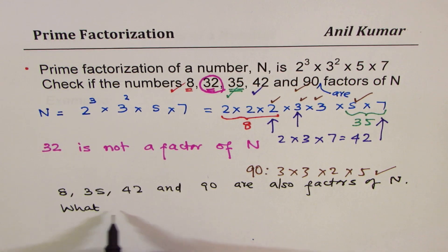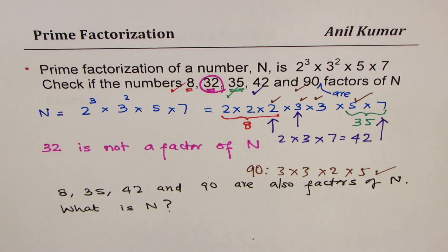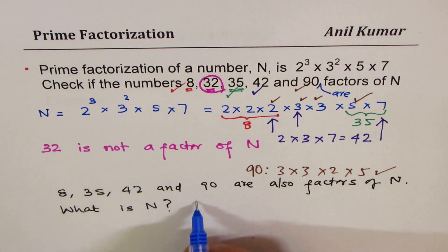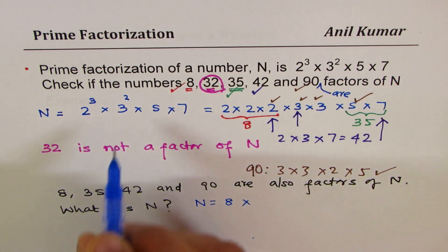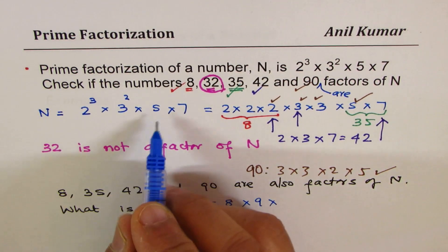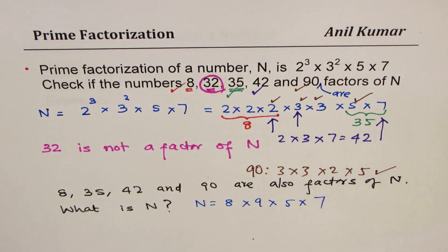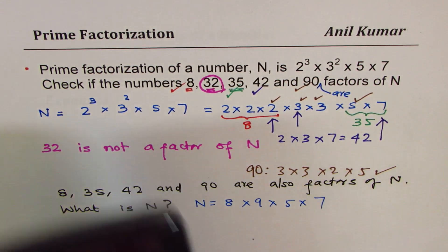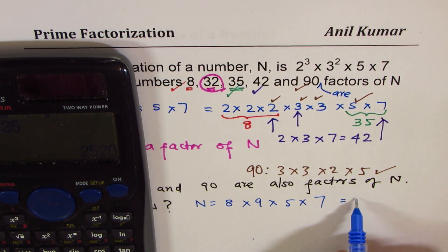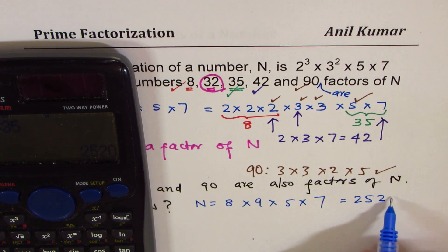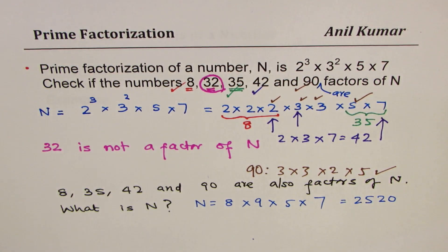What is n? Can you tell me what n is? Well, n is the product of all these prime factors. n is 2 cubed, which is 8, times 3 squared, which is 9, times 5 times 7. So we have 8 times 9 times 35. Using a calculator, the number n is 2520. We can also get the actual number back from its prime factors.